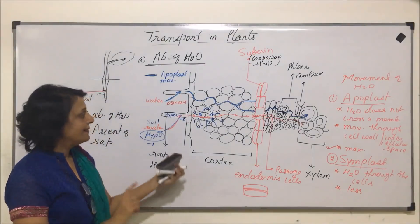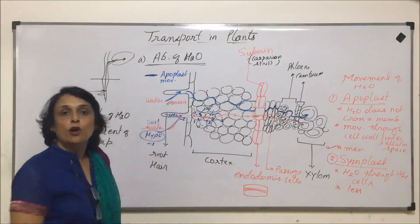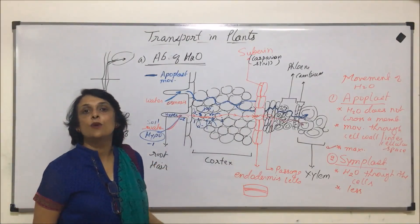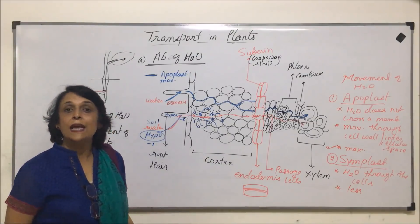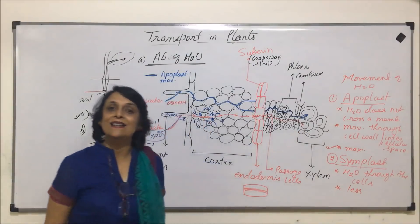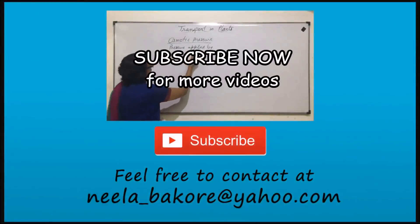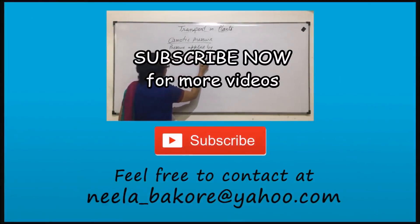This water potential explanation is required only when we are talking of symplast movement. In apoplast, water potential is not required because movement is through intercellular spaces and cell walls. So the first step — absorption of water — is complete. The next step is how this xylem vessel conducts water upward, which we call the ascent of sap.